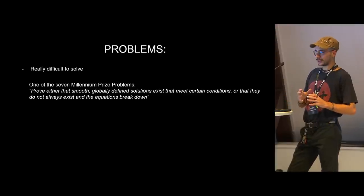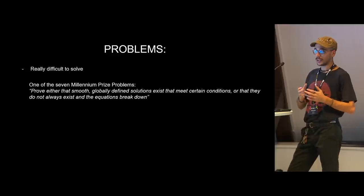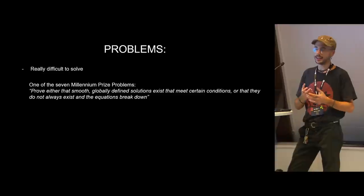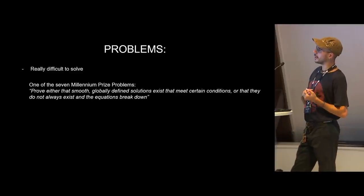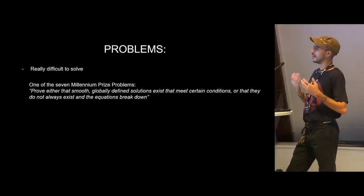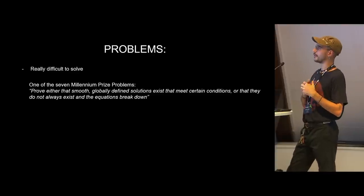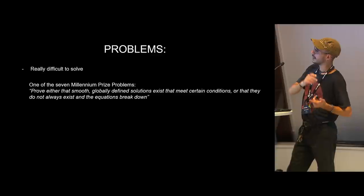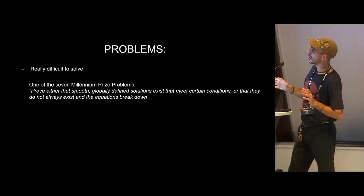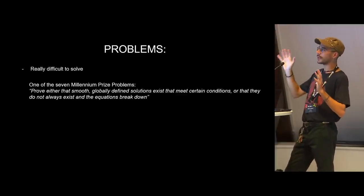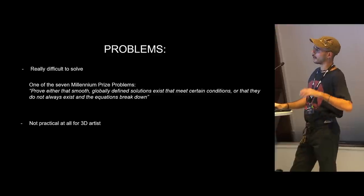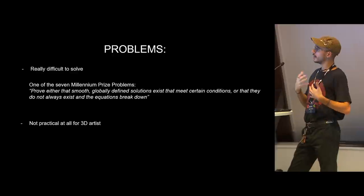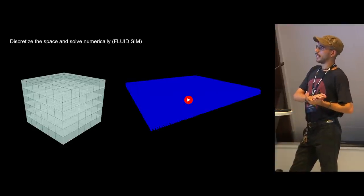Okay. Well, so problems of this way of facing the problem is that these equations are really difficult to solve in paper. It's actually one of the seven millennium prize problems. So these are like seven mathematical problems that if someone solved them, they will get like a million euros. And also fame and glory for all your life. Exactly. You need to prove either that the smooth globally defined solution exists that meet certain conditions or that they do not always exist and the equations break down. I don't really know what is the meaning of this phrase, but you can see that this is kind of a really hard problem. Also for practical, if you are a 3D artist and you want to go through fluid sims, going through the exact solutions is not the best way.